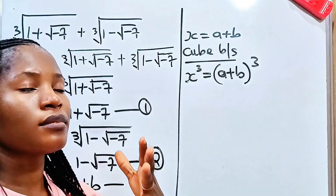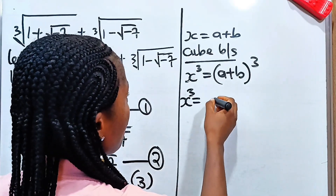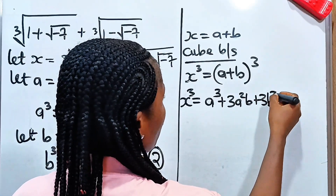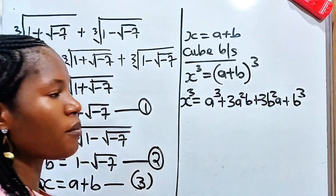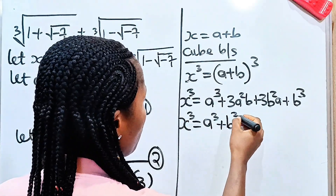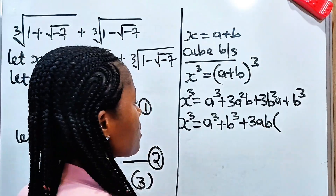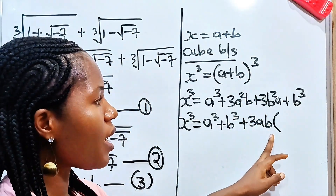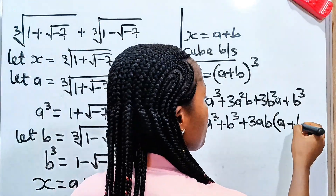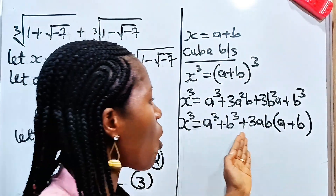Using the algebraic identity, (a + b)³ is the same as a³ + 3a²b + 3b²a + b³. If we rearrange, we get a³ + b³ plus — since 3ab is common — 3ab(a + b). So to get the value of x we need all of this.